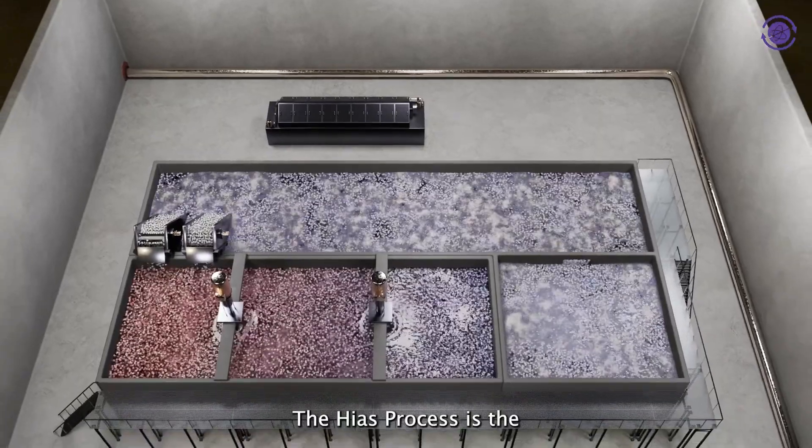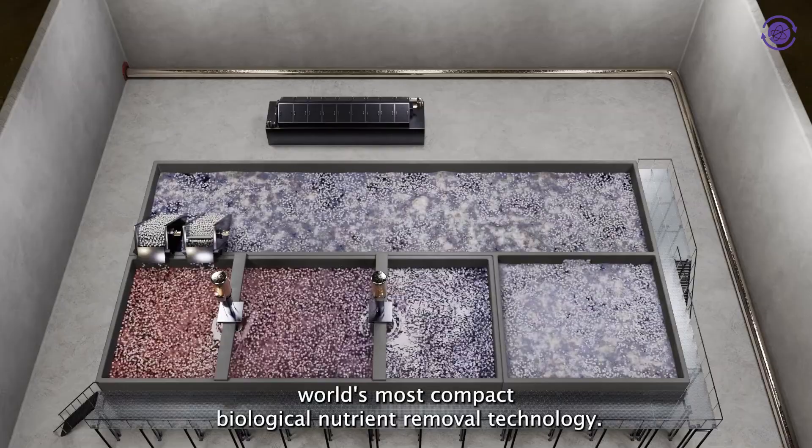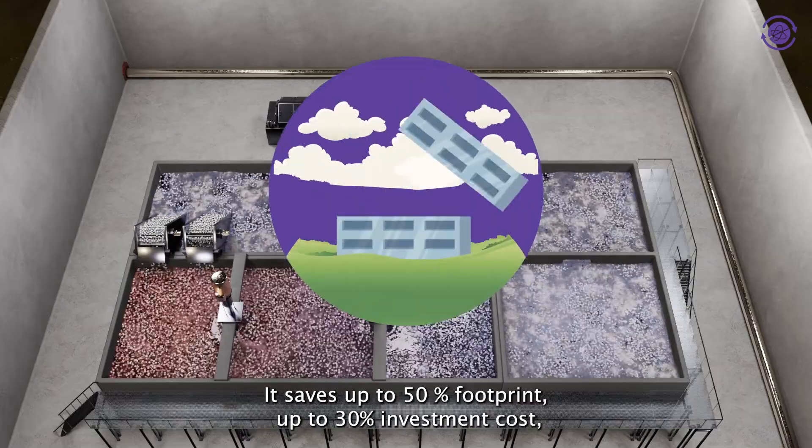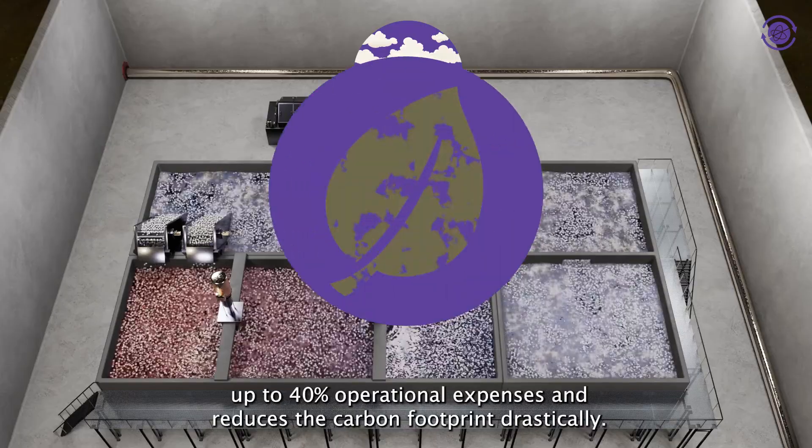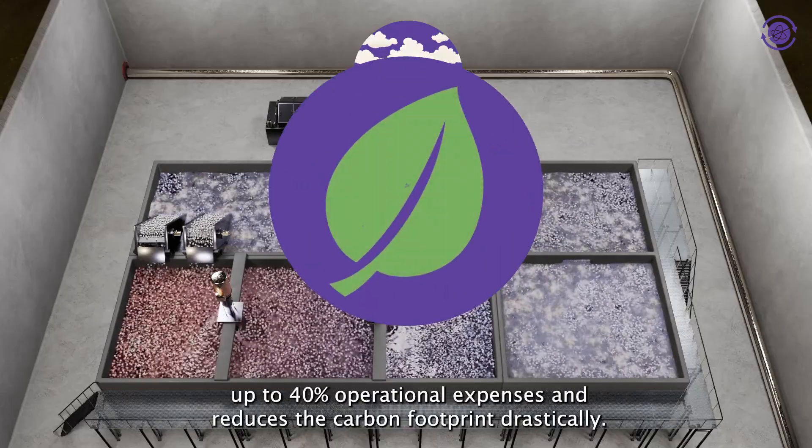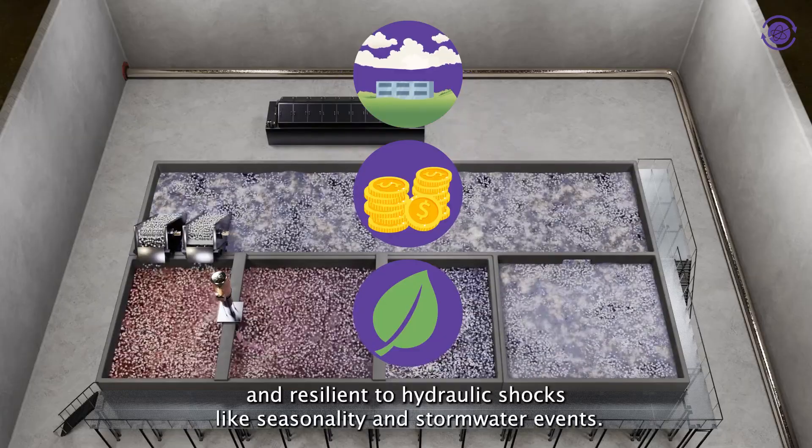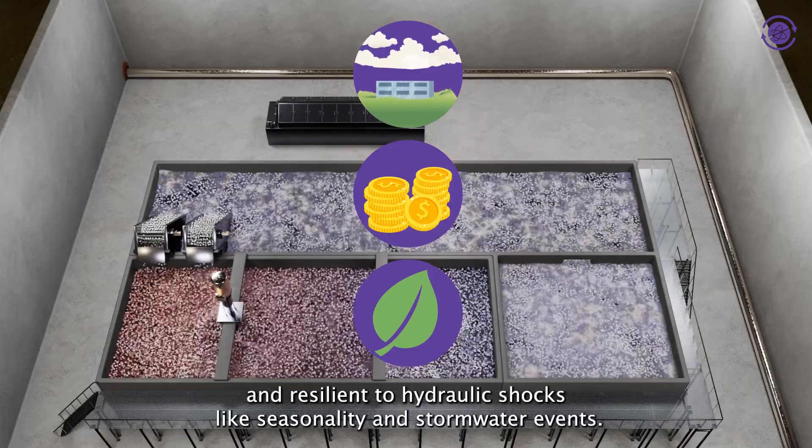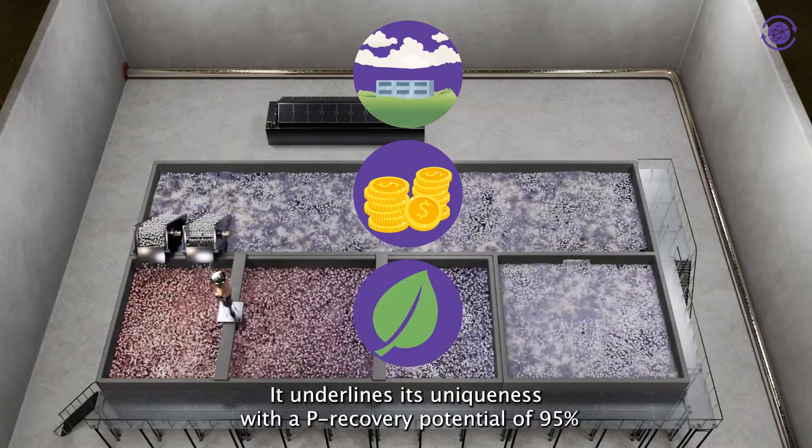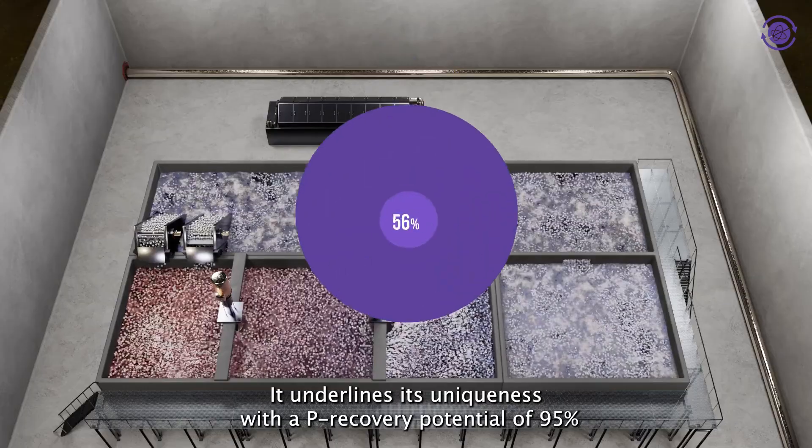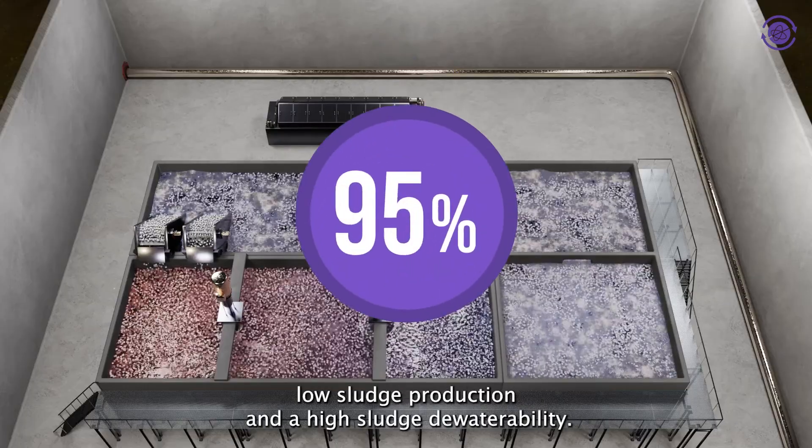The HES process is the world's most compact biological nutrient removal technology. It saves up to 50 percent footprint, up to 30 percent investment cost, up to 40 percent operational expenses, and reduces the carbon footprint drastically. The HES process is easy to operate and resilient to hydraulic shocks like seasonality and stormwater events. It underlines its uniqueness with a pure water recovery potential of 95 percent, low sludge production, and high sludge dewaterability.